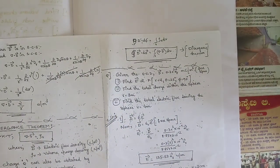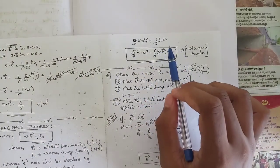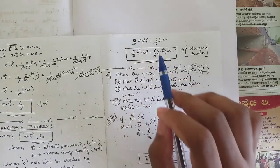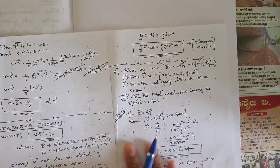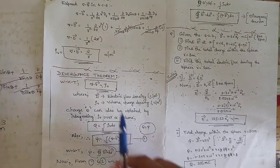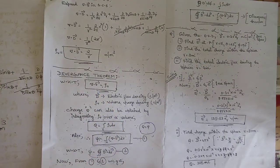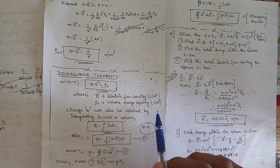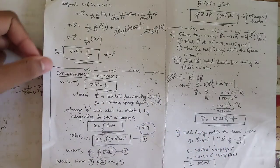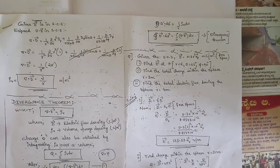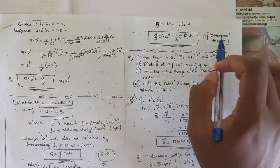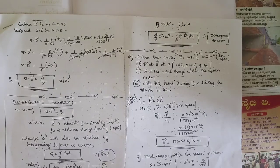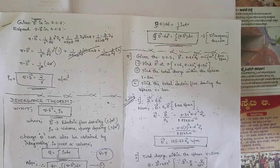For exam purposes, when asked to state and prove the divergence theorem, write the word statement of the equation, then derive it starting from del·D = ρv, mentioning each term with its units — D in coulombs per meter square, ρv in coulombs per meter cube — and show how equating the two ψ expressions yields the divergence theorem equation.